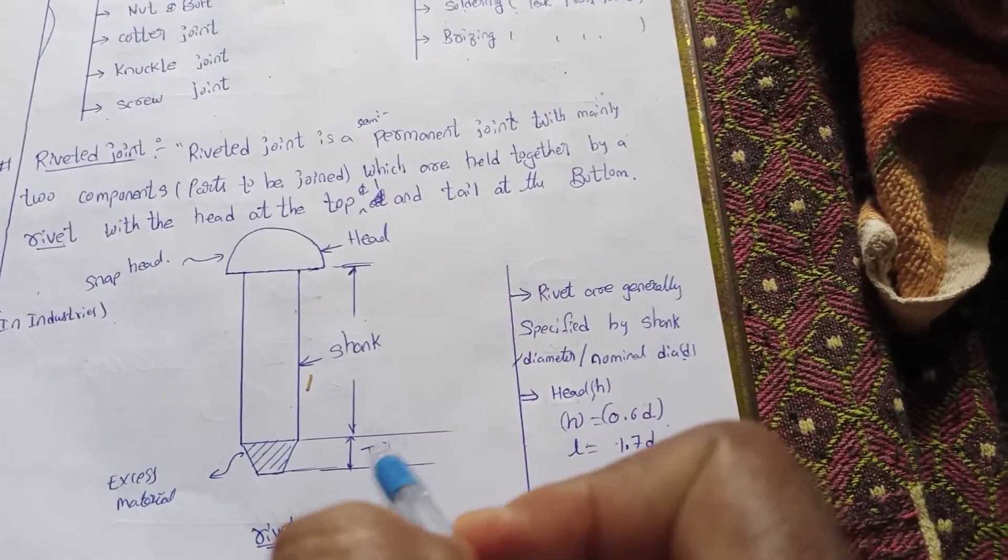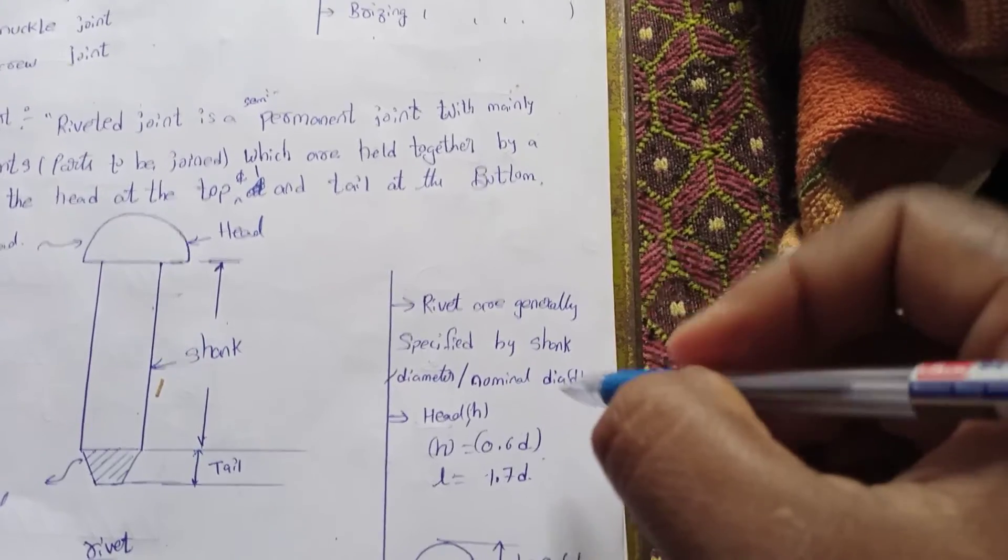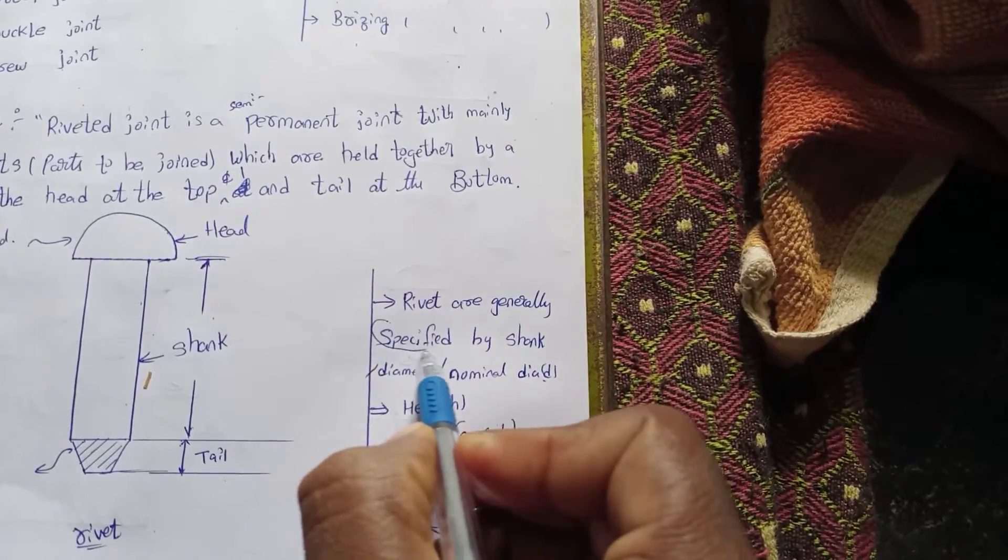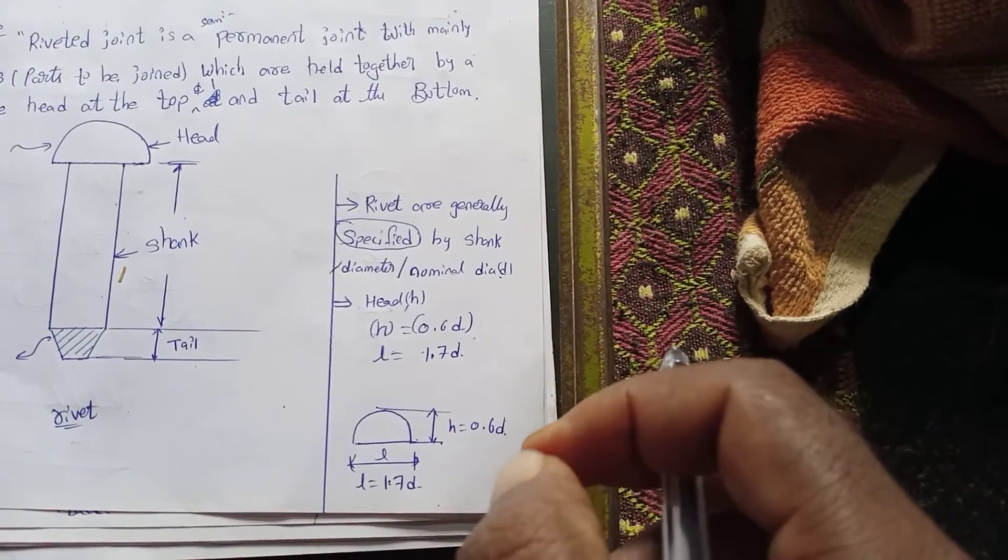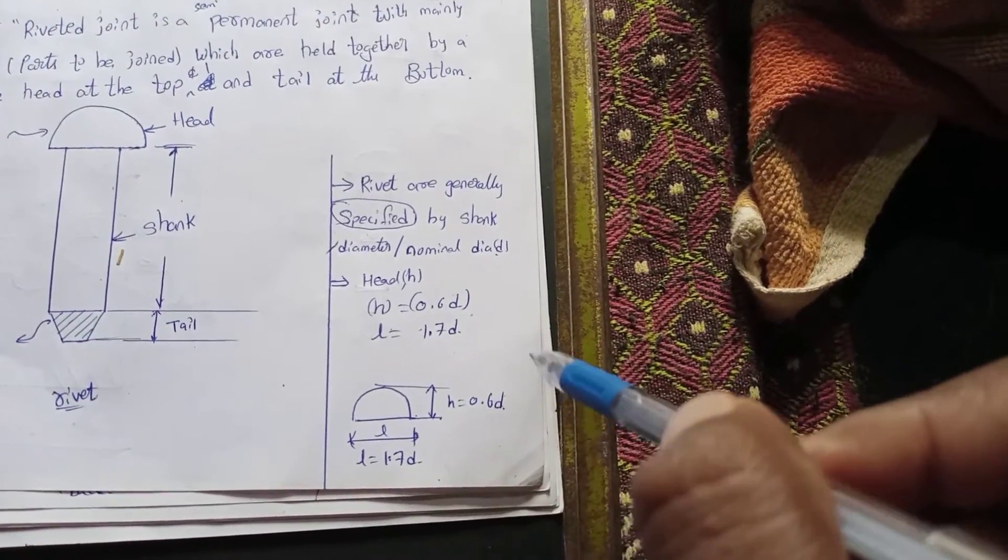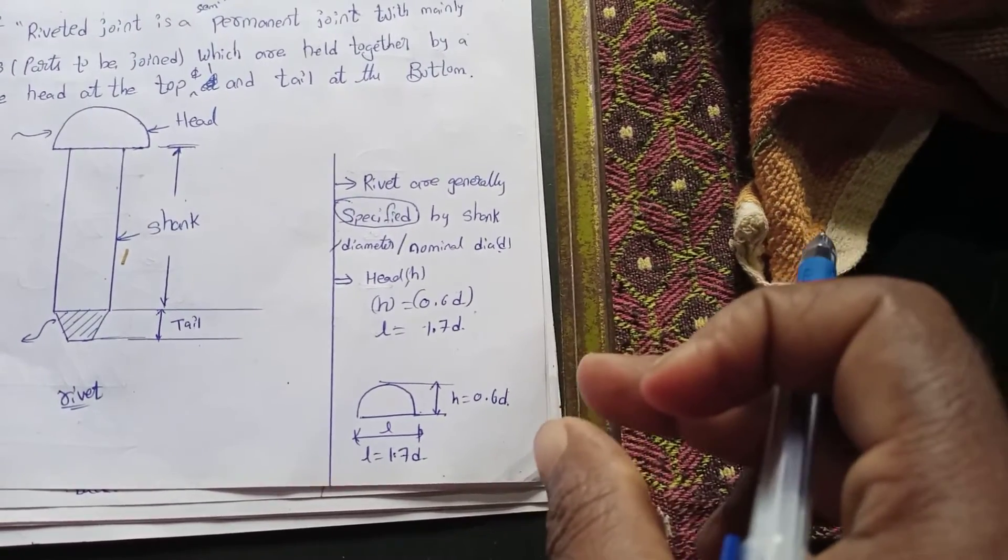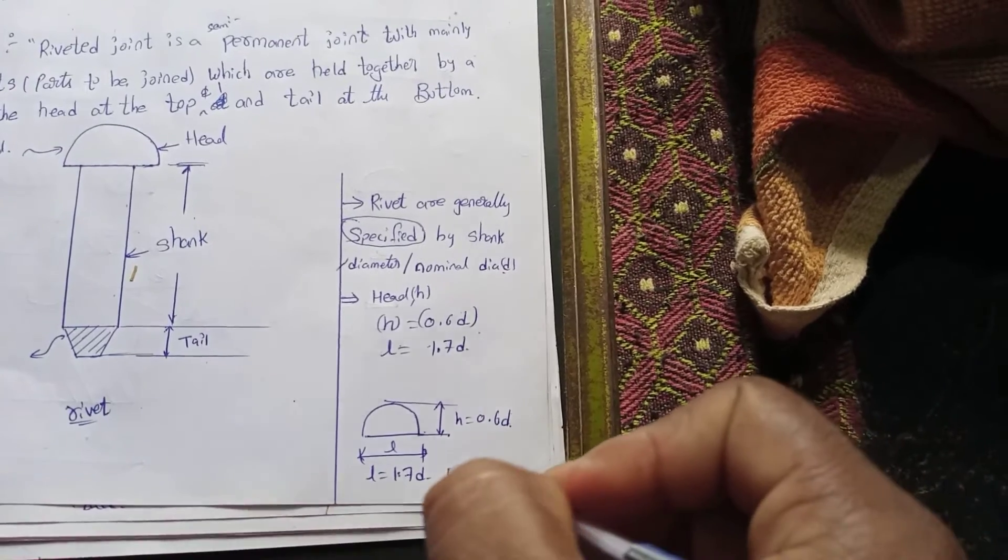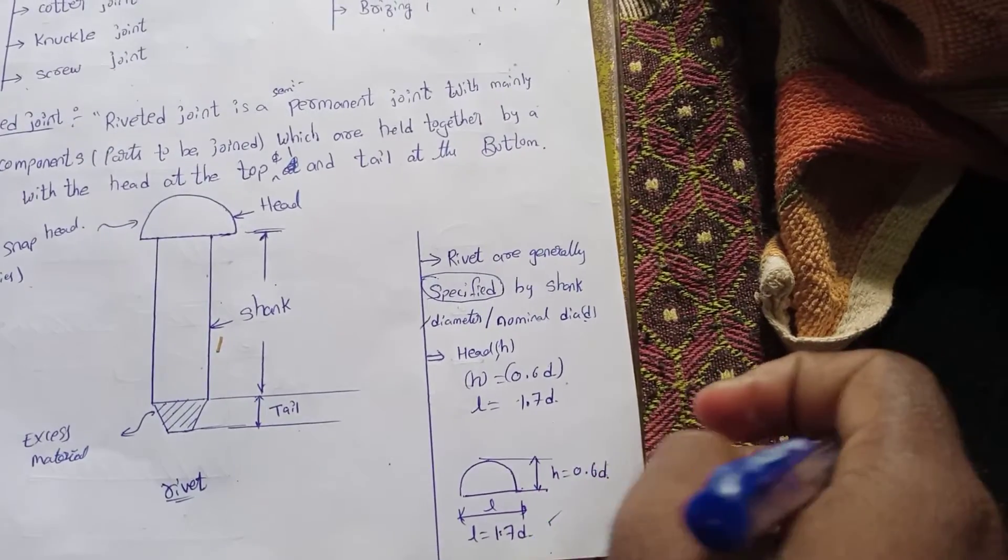This is very useful. This is the excess material. Next, this is the diameter or nominal diameter. The rivet is generally specified by this nominal diameter. This is a type of rivet - 0.6d for height, 1.82d to 1.7d dimensions.